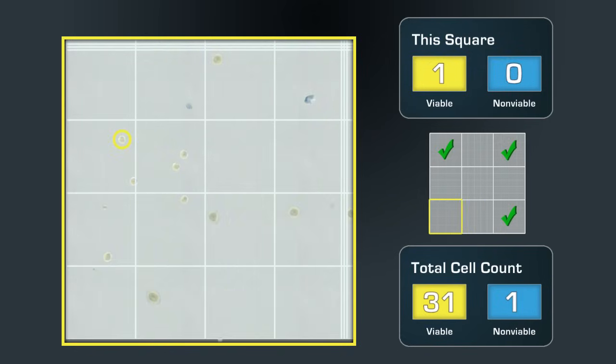And now the bottom left square. There are ten viable cells and two non-viable cells.